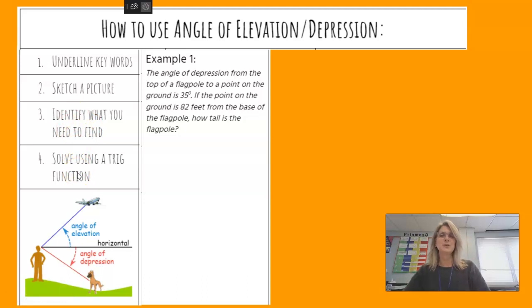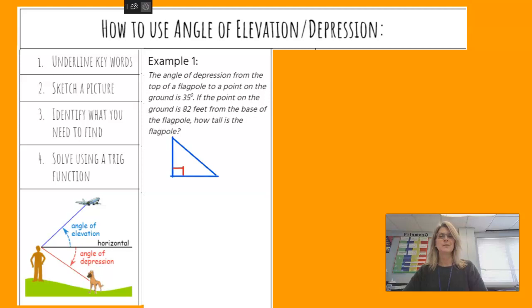Example one. The angle of depression from the top of the flagpole to a point on the ground is 35 degrees. If the point on the ground is 82 feet from the base of the flagpole, how tall is the flagpole? Well, I'm going to start with number two, actually. I know it's going to be a right triangle, so I'm going to start there, and then underline the keywords.